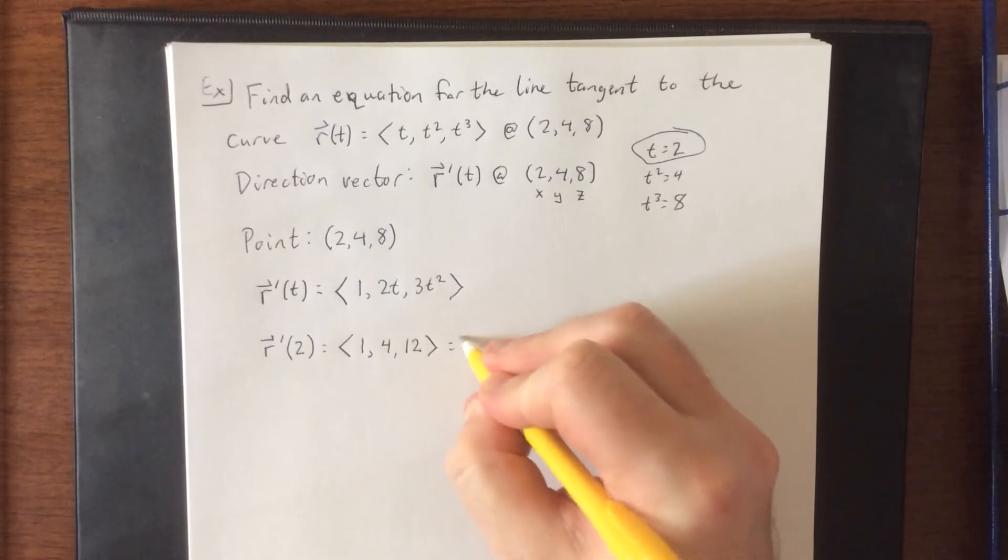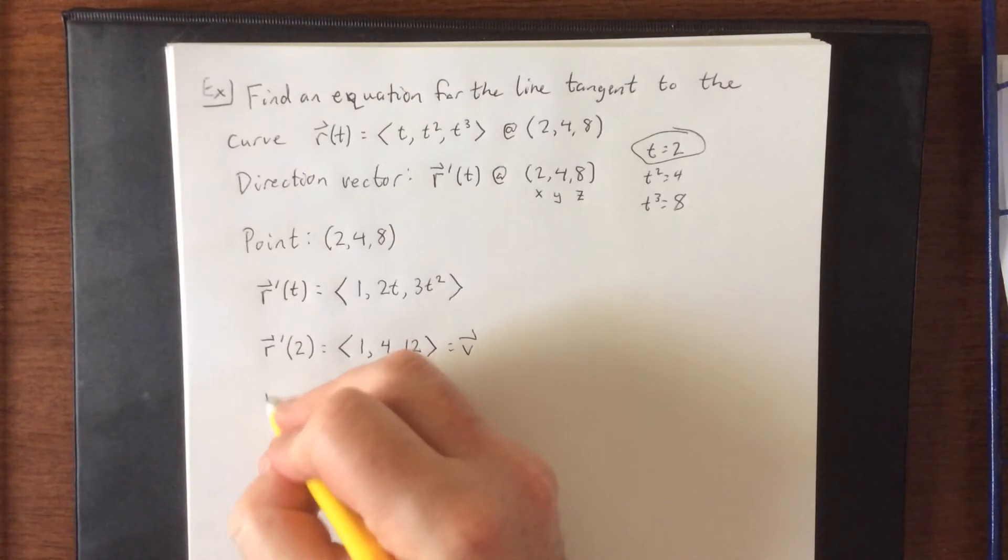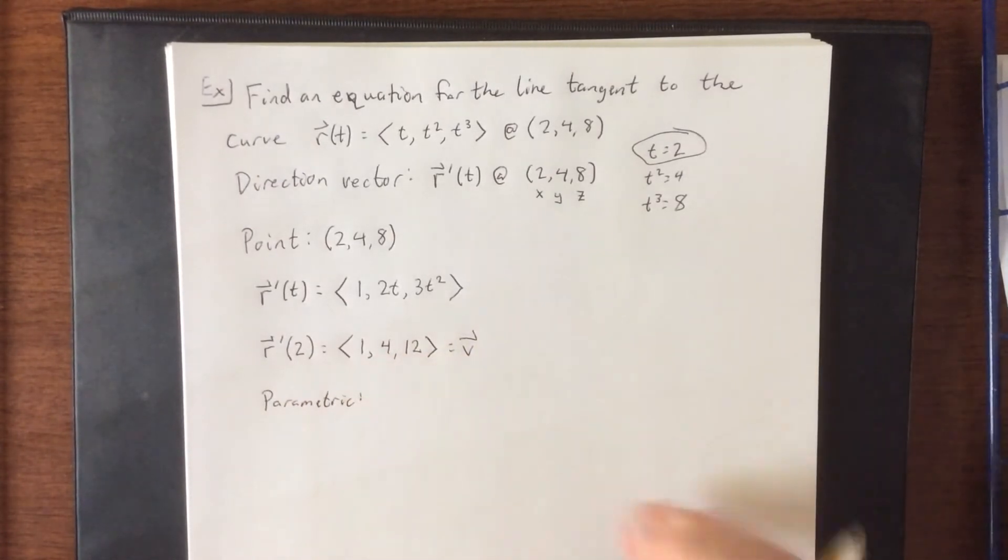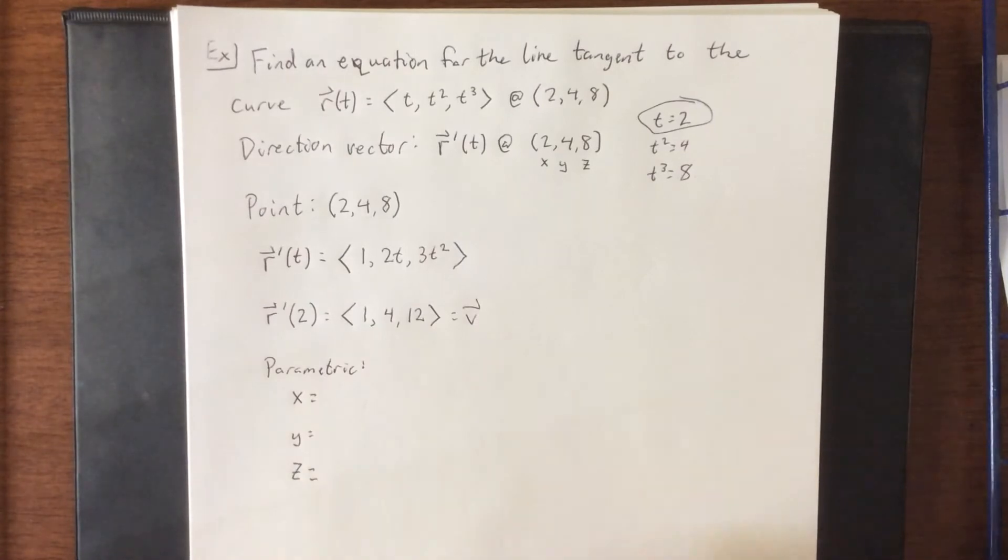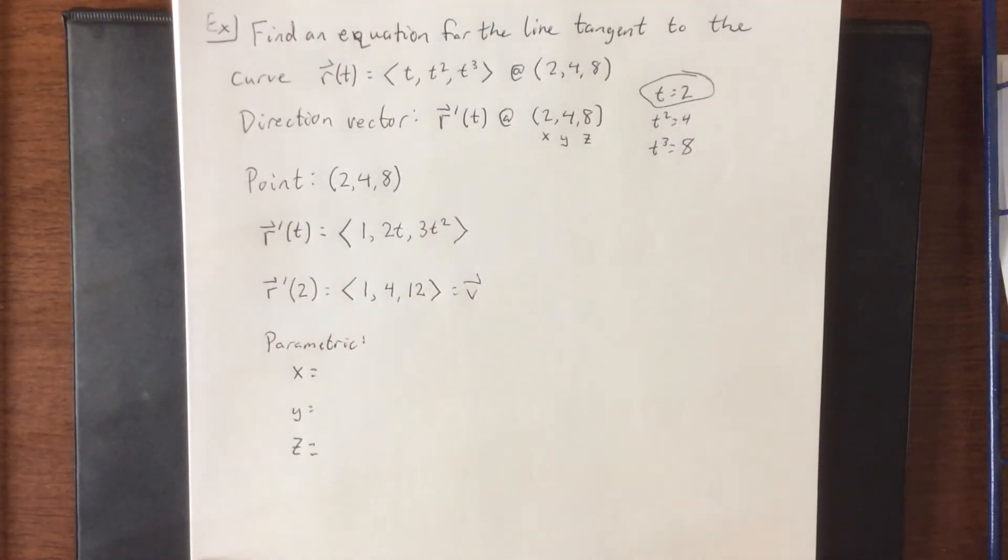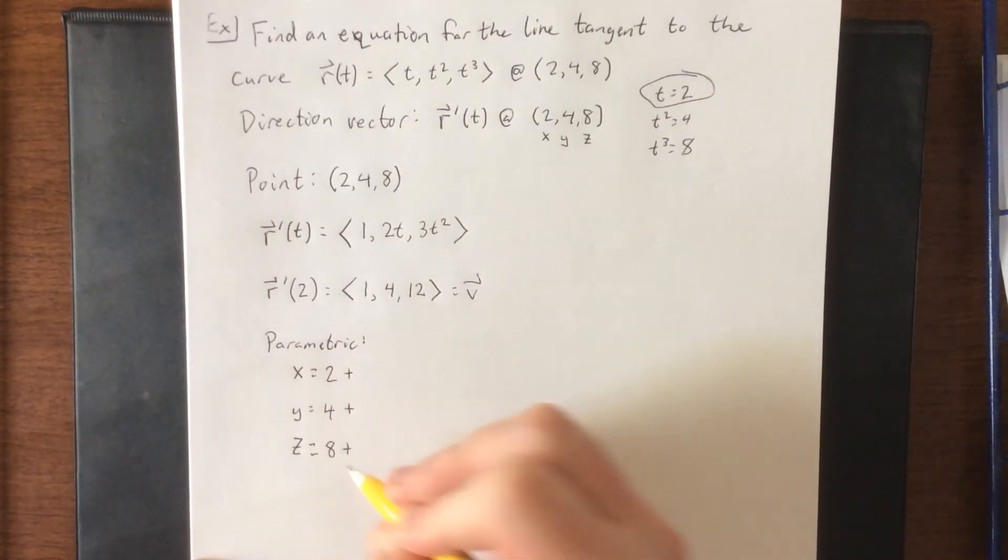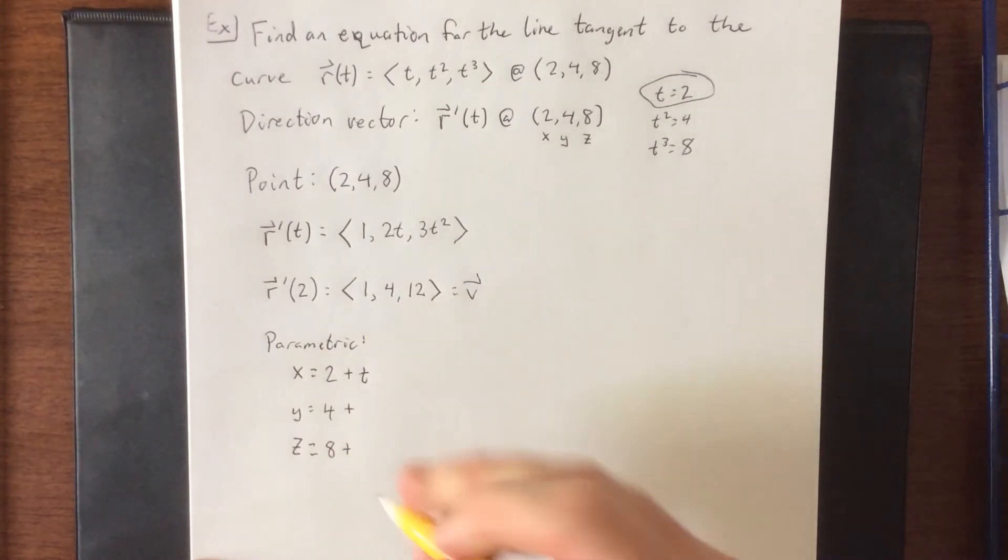So this will count as the direction vector for our line. Then, bringing in the different versions that we can have for the equation of a line, parametric form is where we express it in the form x equals, y equals, and z equals. All three of these should take the same form, which is starting point plus direction vector component times t. So for x, that'll be 2 + 1t. For y, that'll be 4 + 4t. And for z, that'll be 8 + 12t.